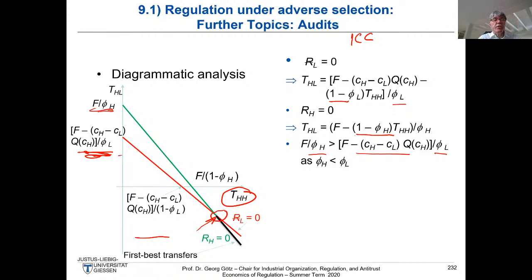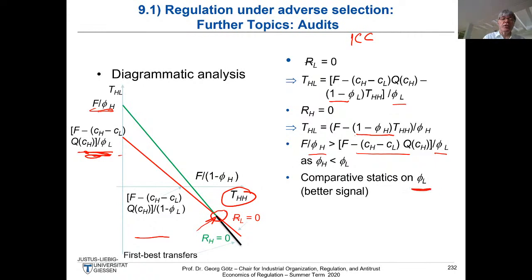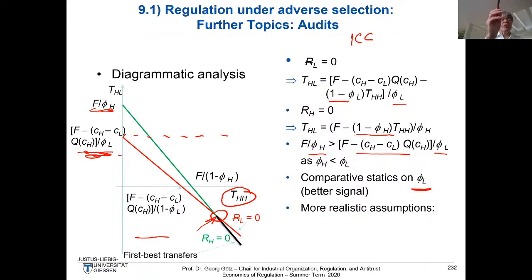If the auditor gets better — if φ_L increases — the slope of the red ICC line becomes less steep. In the limit, if the signal is perfect, the ICC becomes a horizontal line. The problem is that even a high-type firm might sometimes be punished and make losses due to a wrong signal. For a risk-neutral firm with unlimited access to funds this is not a problem, because the expected profit is zero and the firm is satisfied. However, if the firm has limited liability or is risk averse, the ability to punish is constrained.